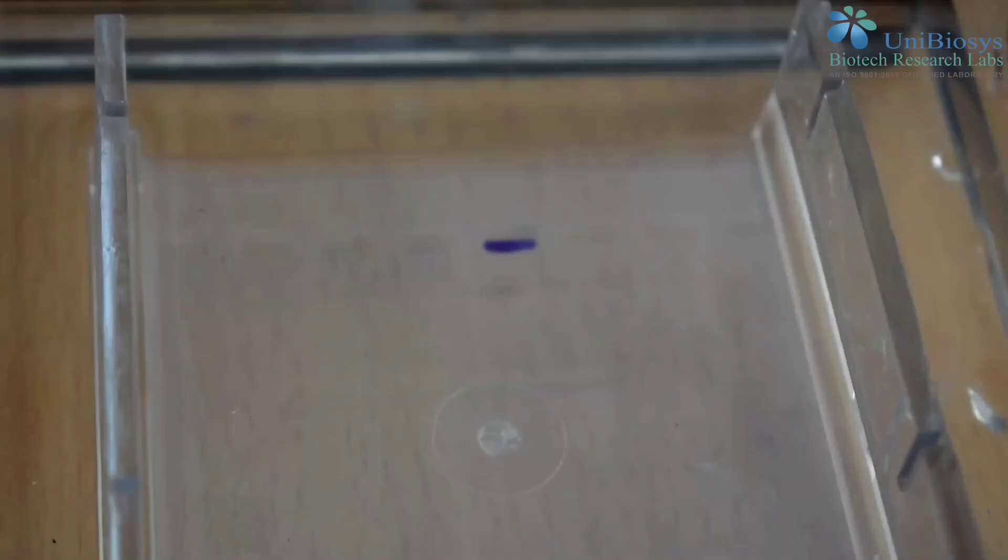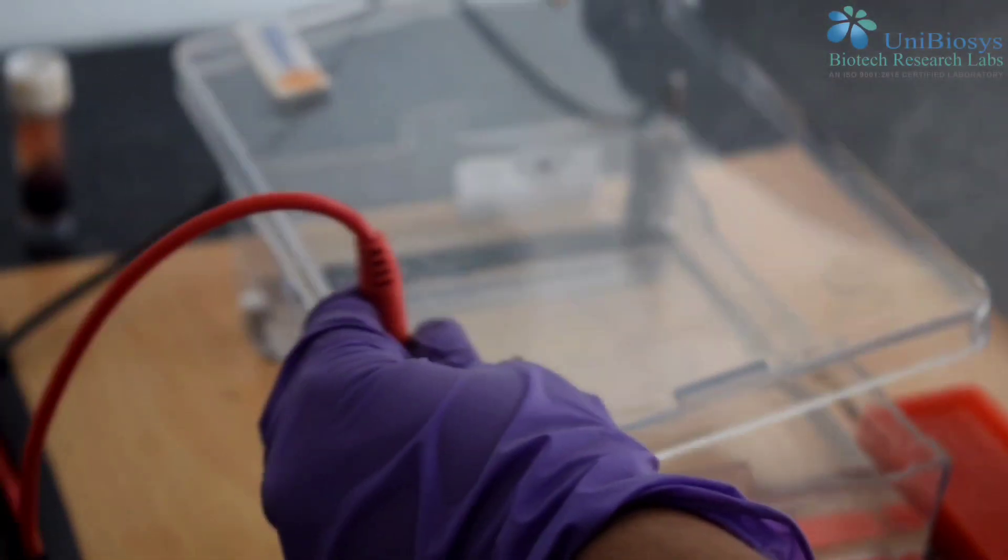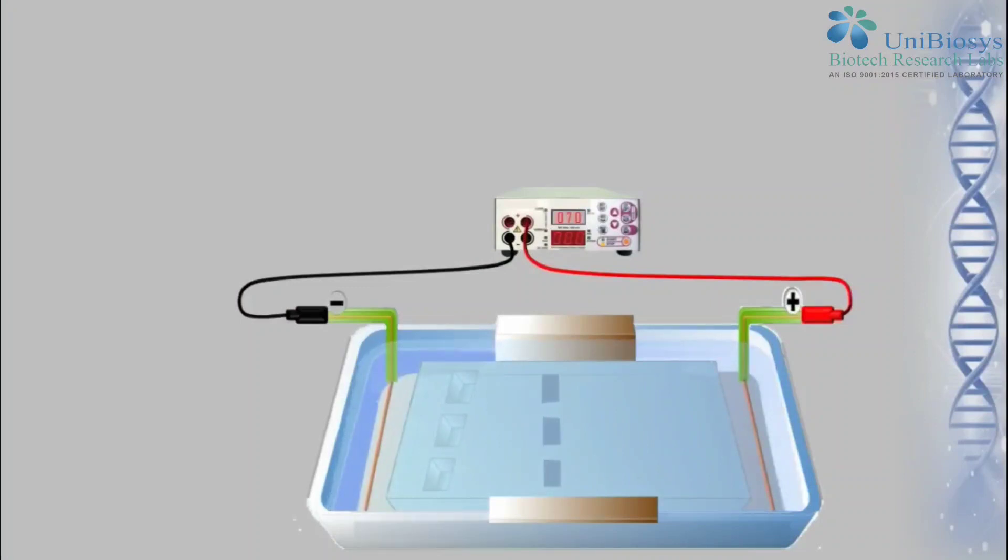Electrophoresis is carried out at 5-10 volts per centimeter. The direction in which DNA runs is negative to positive.